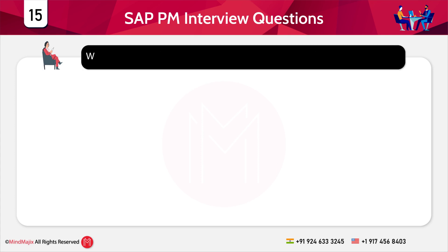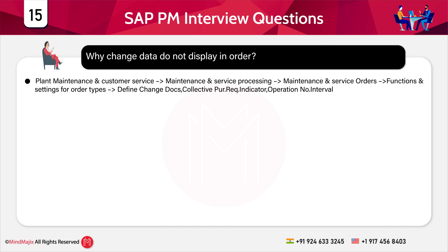Why does change data not display in an order? You must check if the checkbox for change documents is checked in customizing. The path is: Plant Maintenance and Customer Service > Maintenance and Service Processing > Maintenance and Service Orders > Functions and Settings for Order Types > Define Change Documents, Collective Purchase Requirements Indicator and Operation Number of Interval.